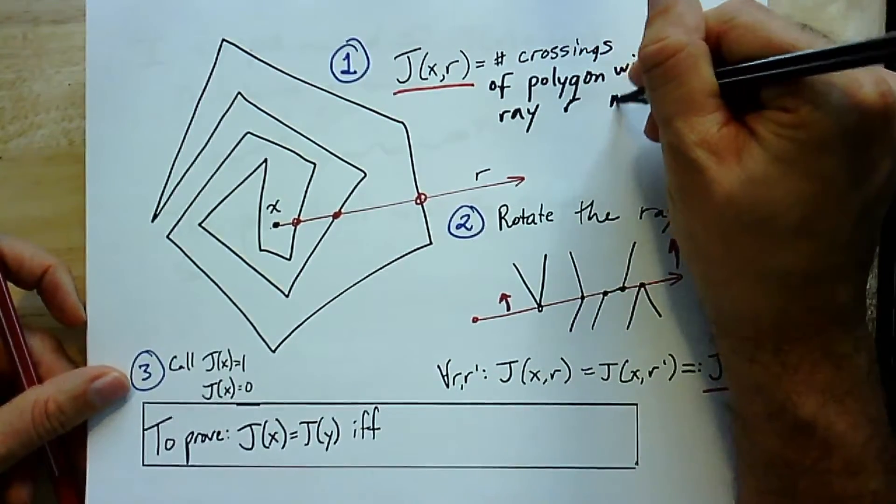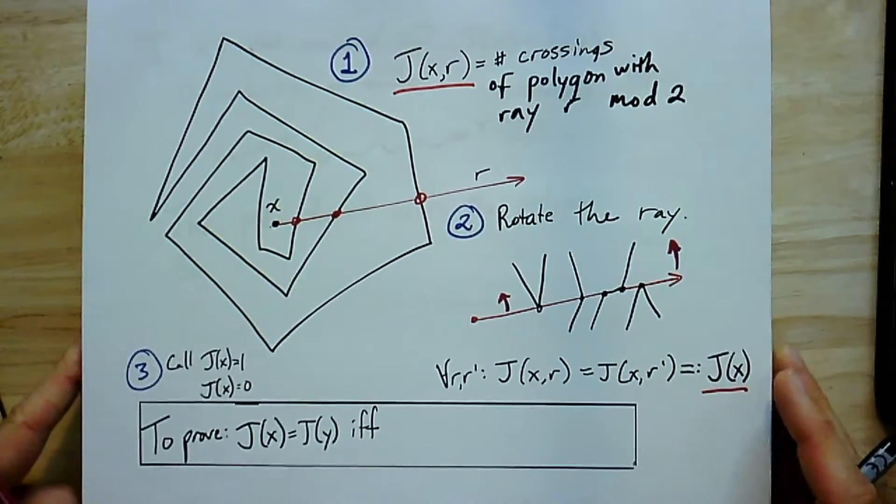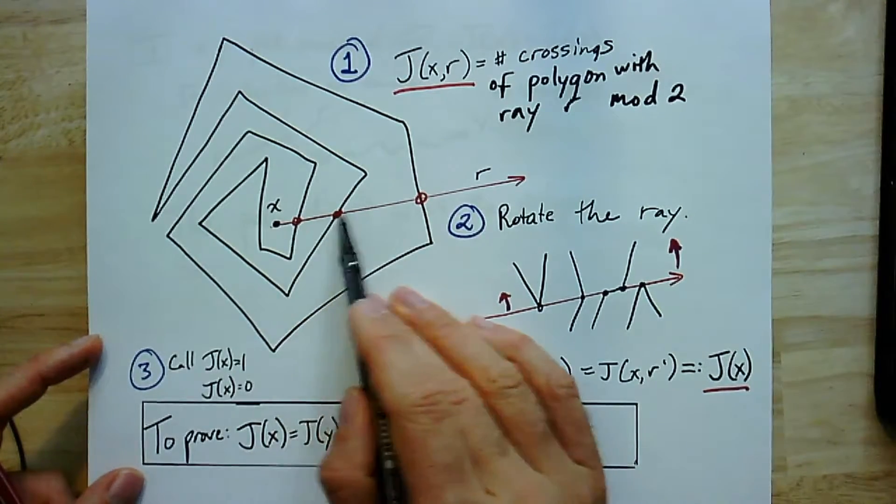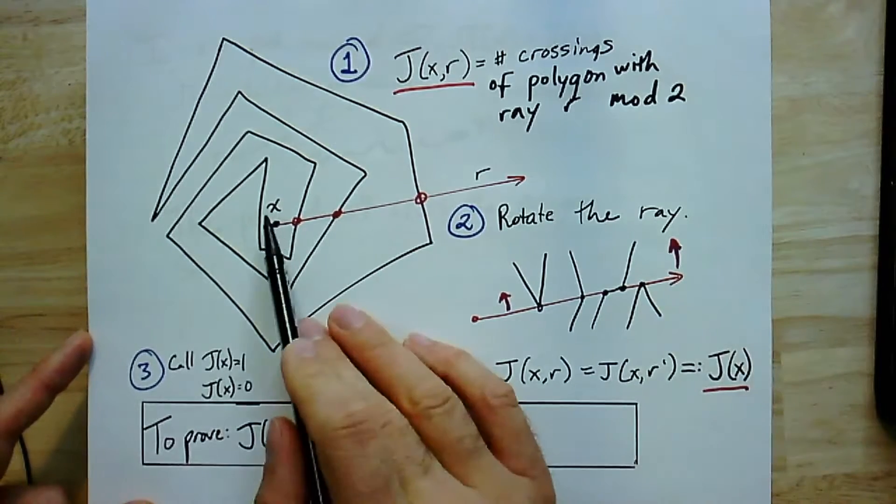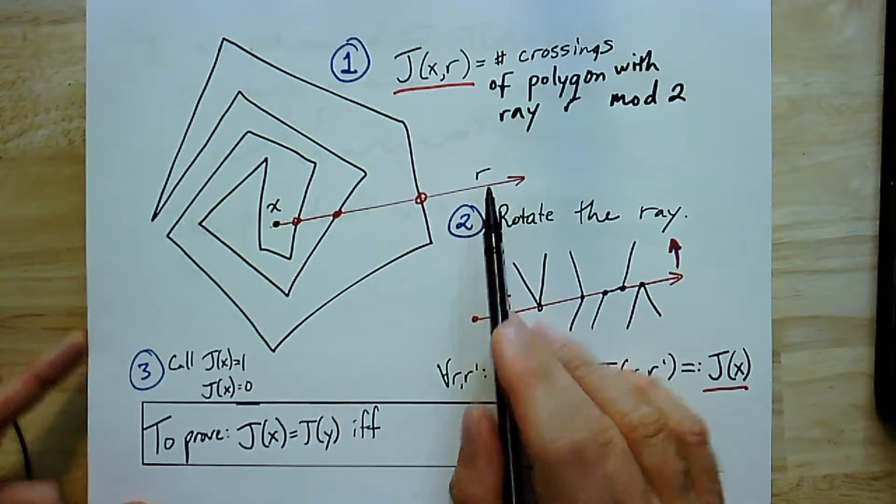And this is going to be the number of times that this ray crosses the polygon. So it's the crossings of the polygon with the ray r, but I'm going to take it modulo two. So it's either zero or one, if it's even or odd number of crossings. So in this case, as I go out, I've got one, two, three. That's an odd number of crossings. So j(x,r) is one.